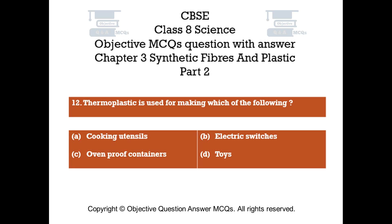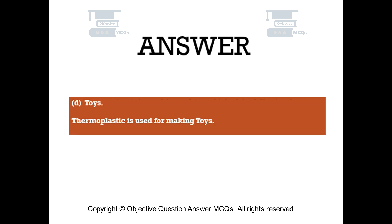Question number 12. Thermoplastic is used for making which of the following? Option A - cooking utensils, Option B - electric switches, Option C - oven-proof containers, Option D - toys. The right answer is Option D, toys. Thermoplastic is used for making toys.